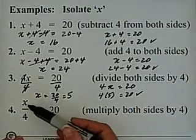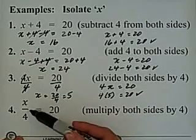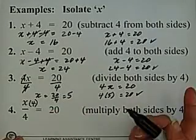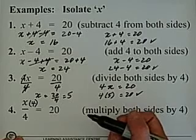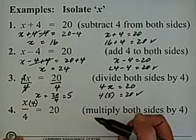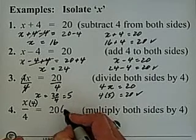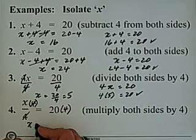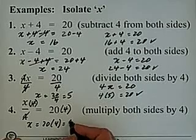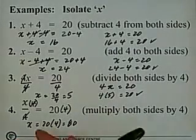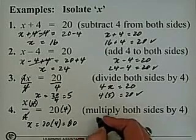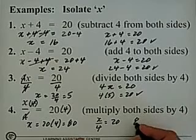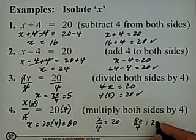For our last basic equation, we have x divided by 4 equals 20. Since it's divided, the opposite is multiplication. We multiply by 4 on the left side because 4 divided by 4 is 1, which gets rid of the 4 in the denominator. We must also multiply by 4 on the right side. These two 4s cancel, and we're left with x equals 20 times 4, which equals 80. Checking: 80 divided by 4 equals 20, so we're correct.